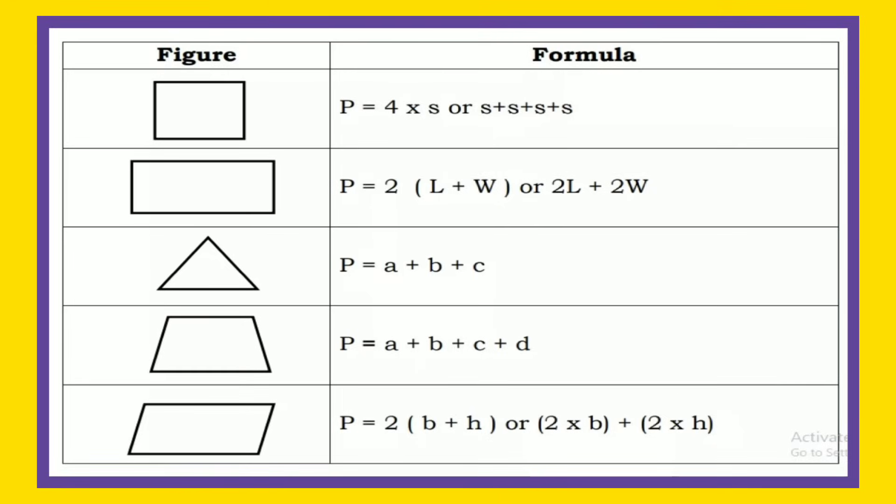P equals 2 times B plus H, or P equals 2 times B plus 2 times H.